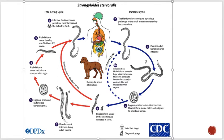A single female can produce up to 50 eggs per day. In intestinal infections, no male parasitic forms are found — only females embedded in the mucosa laying around 50 eggs per day. The eggs hatch within the mucosa and emerge into the lumen of the small bowel as non-infectious rhabditiform larvae.